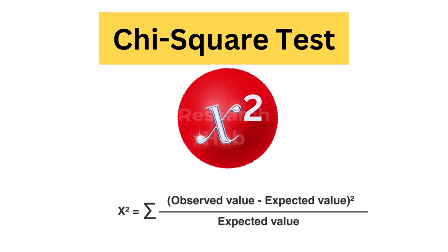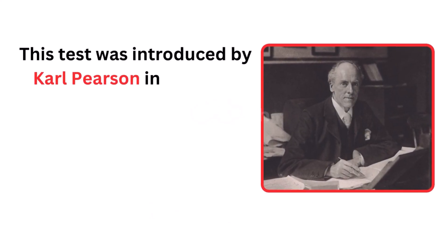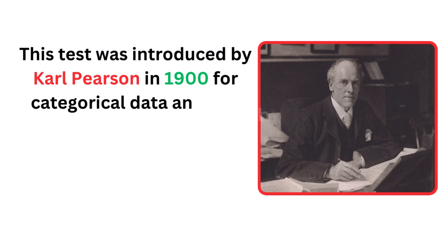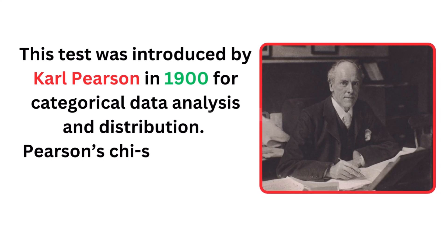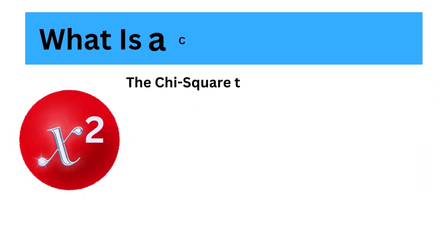Usually, it is a comparison of two statistical data sets. This test was introduced by Carl Pearson in 1900 for categorical data analysis and distribution. So it was mentioned as Pearson's chi-squared test. So, first, what is a chi-squared test?